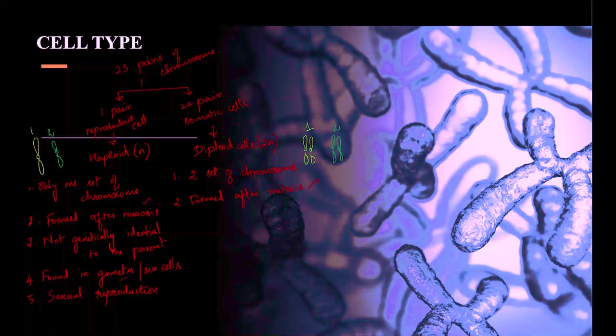Diploid cells are formed after mitosis. Diploid cells are genetically identical because crossing over does not take place in diploid cells.